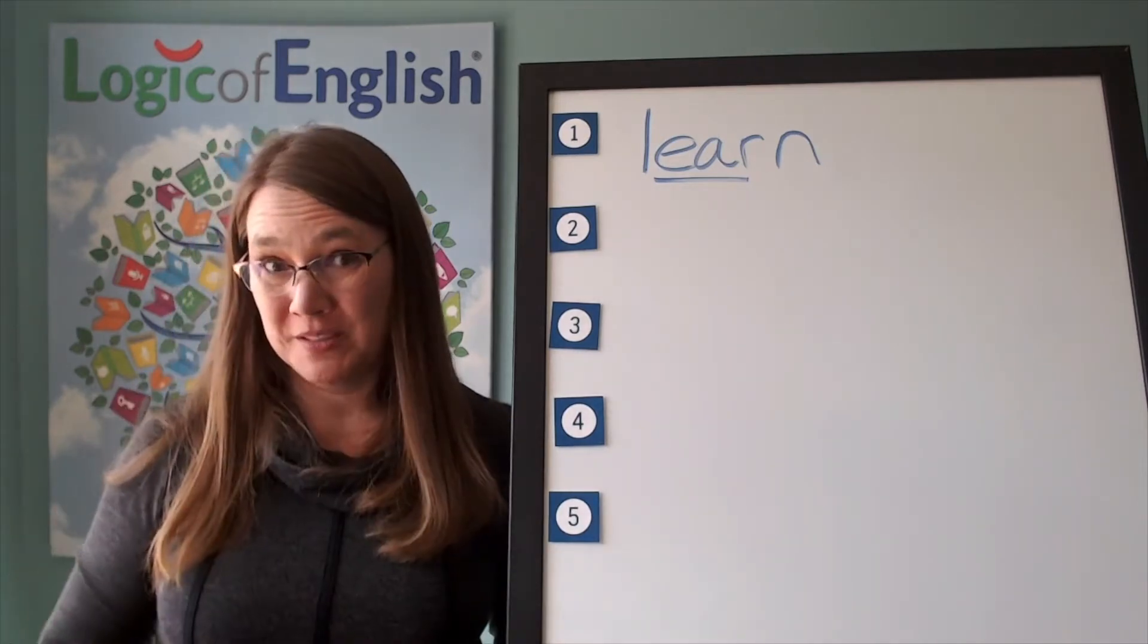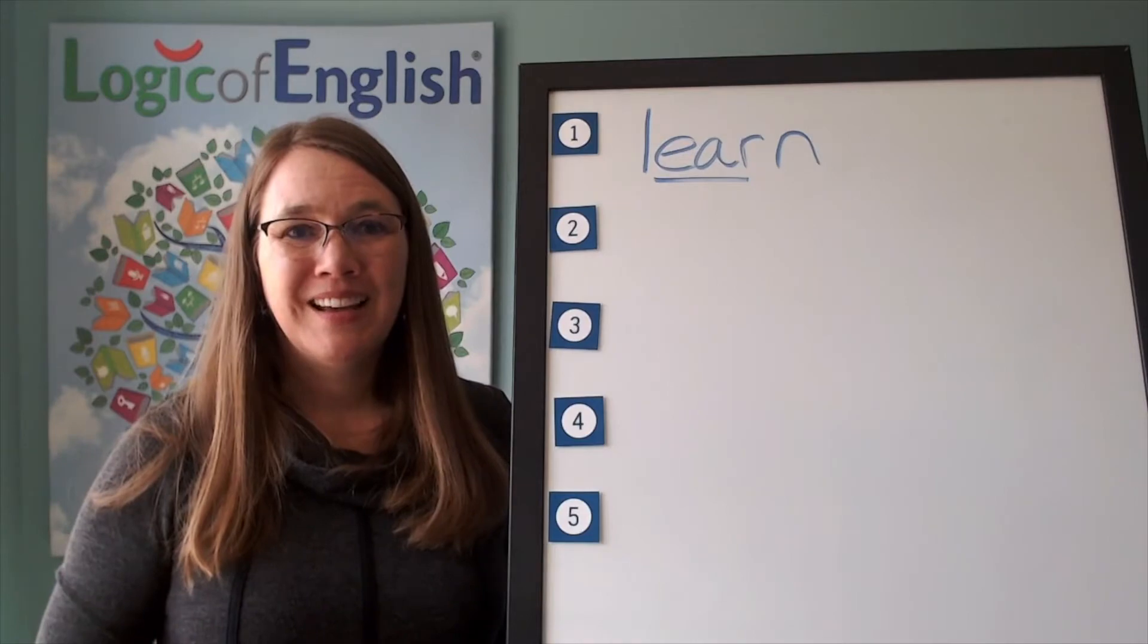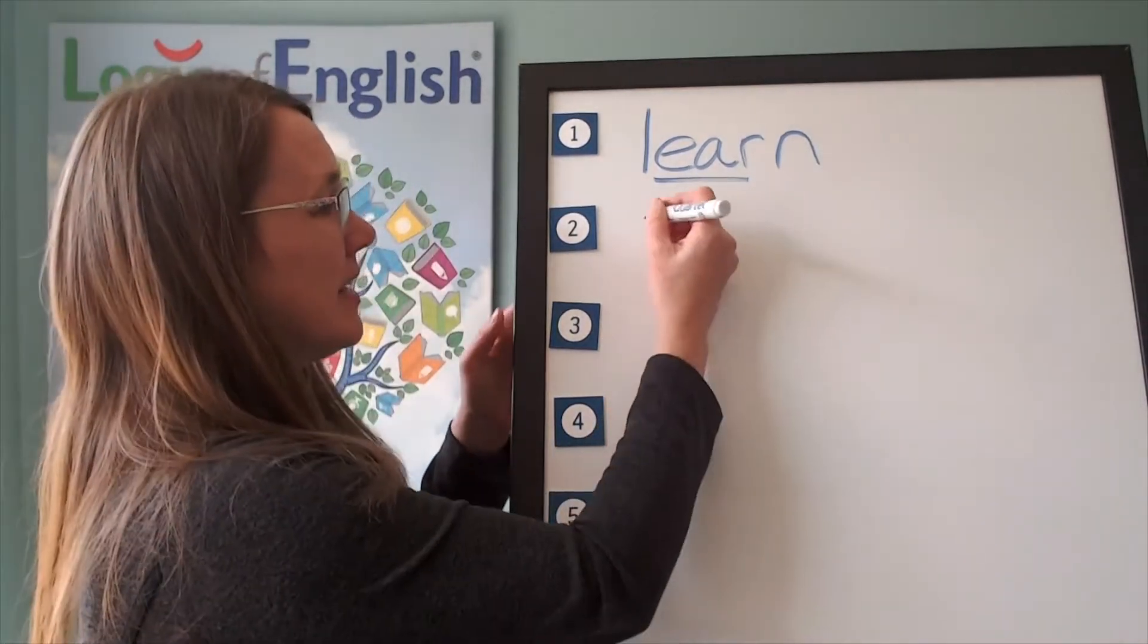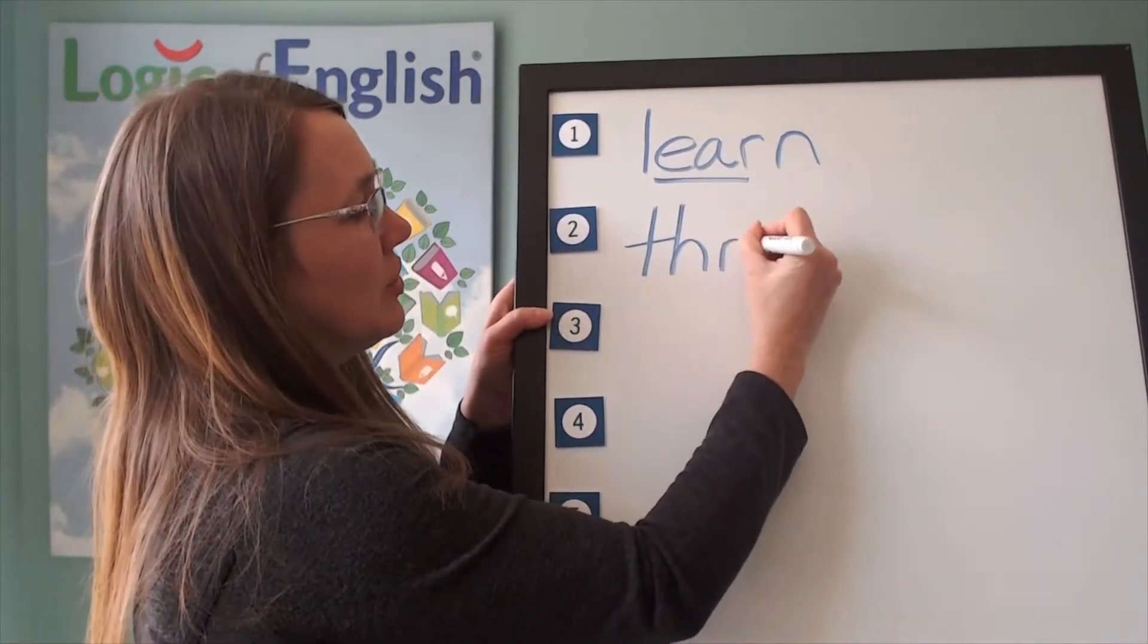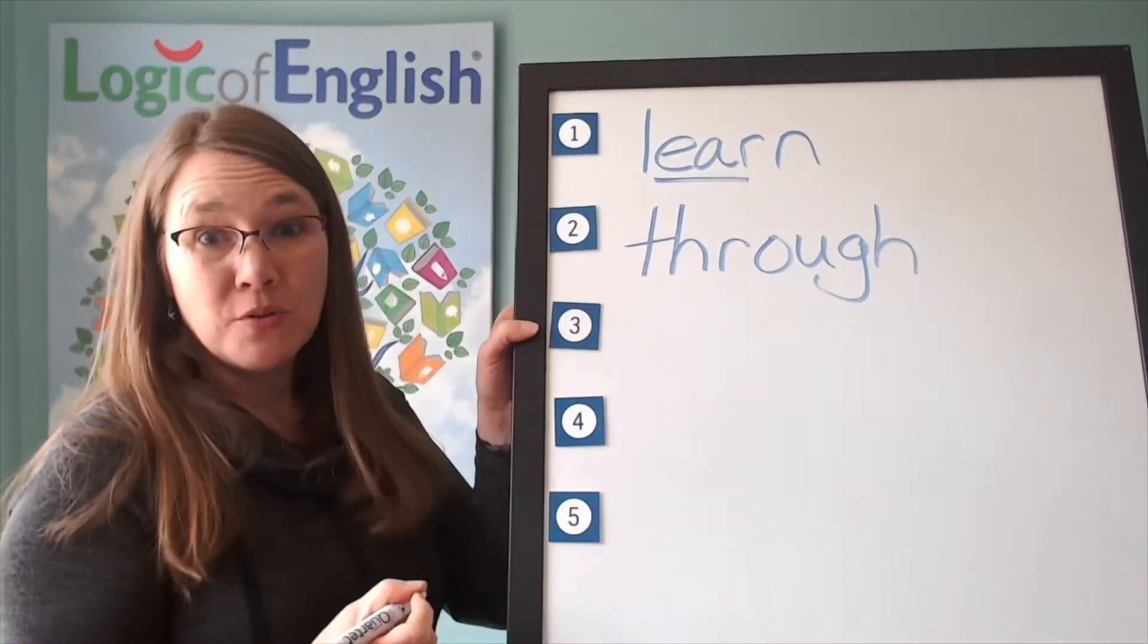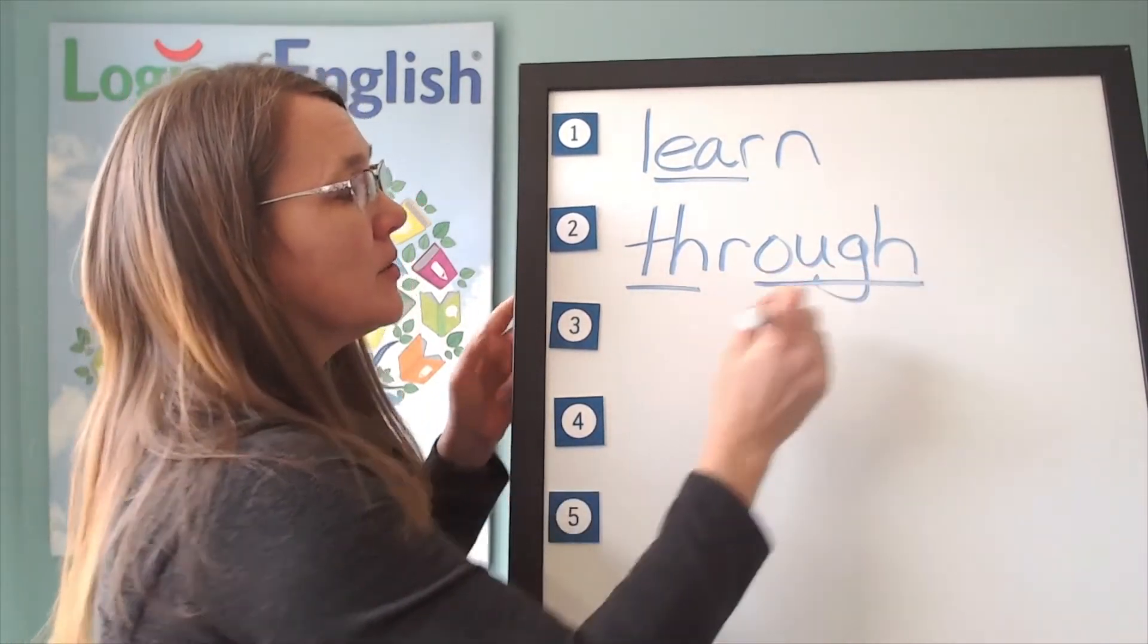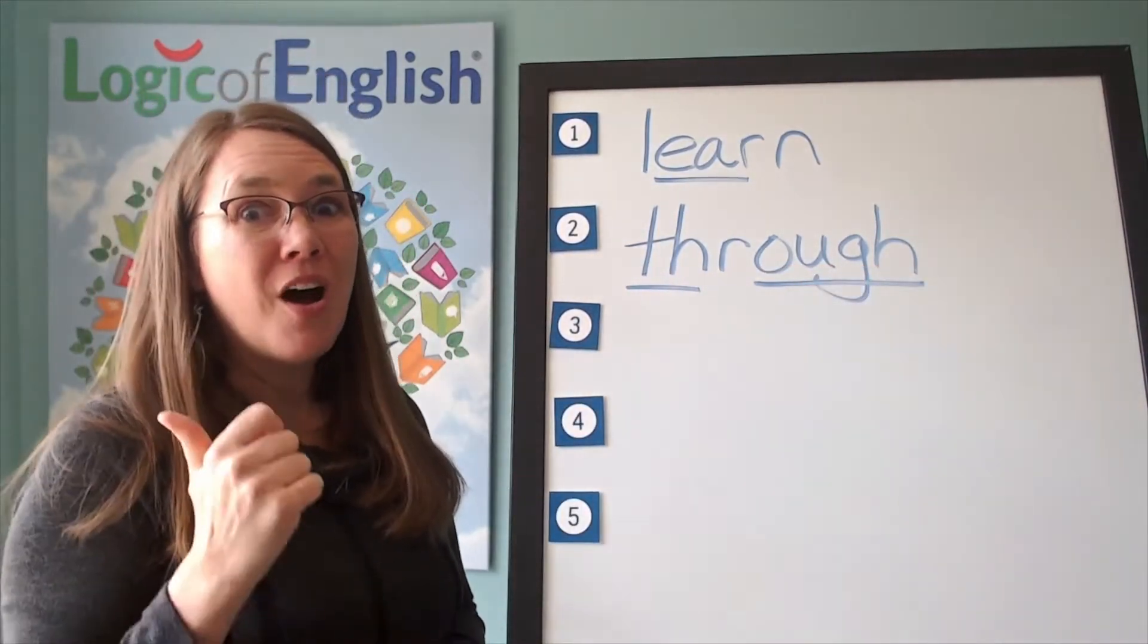Go ahead and write 'through.' Good job sounding it out. Now help me. Th-er-oo. Now how will we mark it? We'll underline this and we'll underline the 'oo.' What sound of ah-oh-oo?